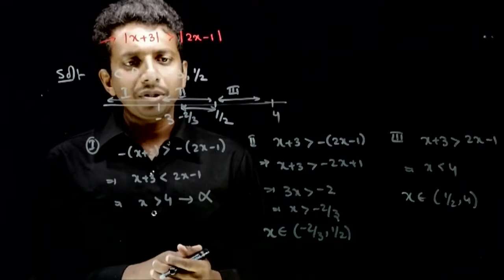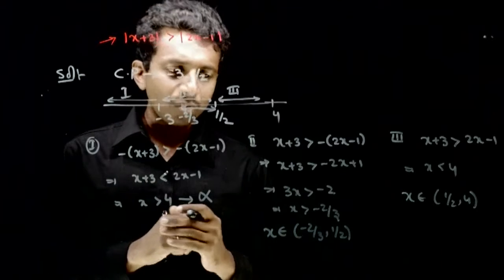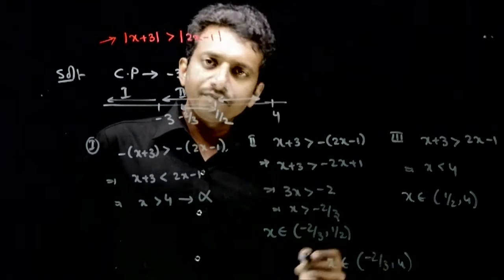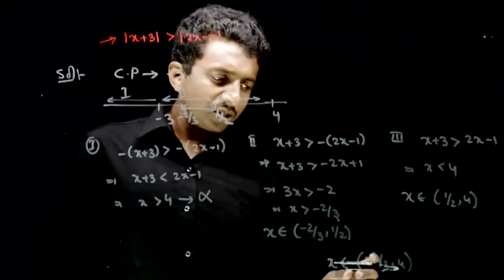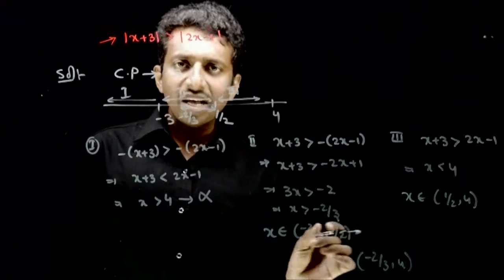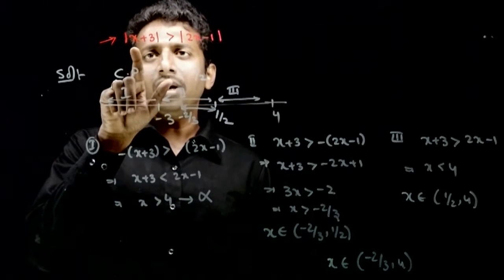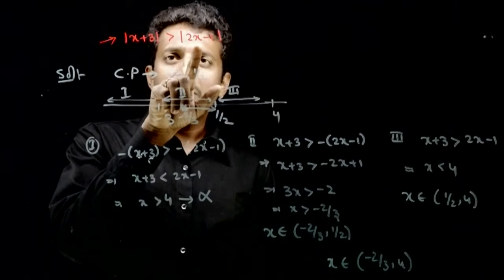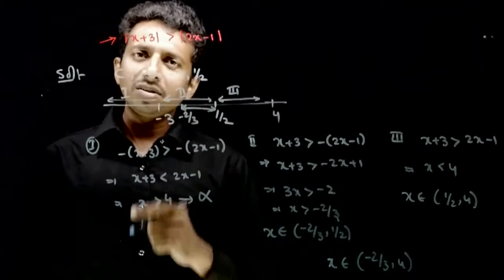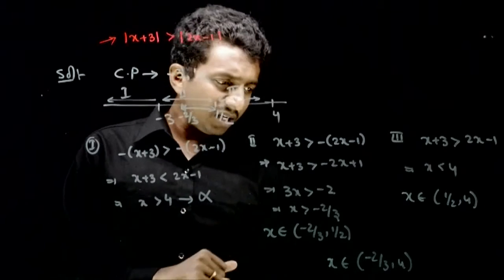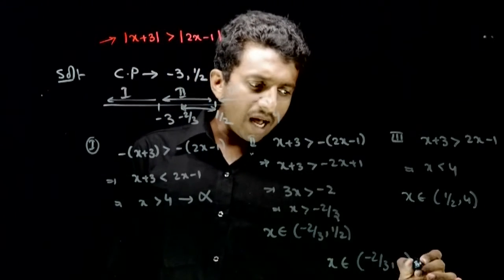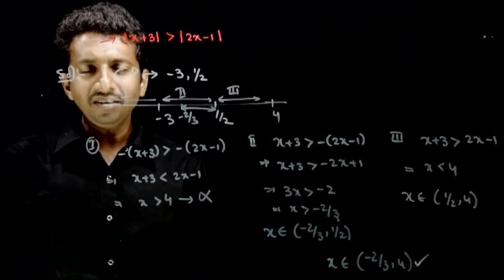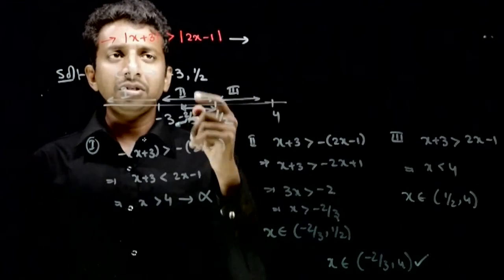Let us combine the solutions. Over all real numbers, combining minus 2 by 3 to half and half to 4, the solution is x belongs to (minus 2 by 3, 4). Let us verify at x equals half: mod of (3 and half) is greater than mod of 0, which is true, so half is also included. Therefore, x belongs to (minus 2 by 3, 4) is the correct solution. Thank you.